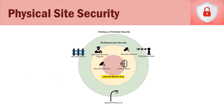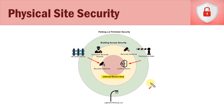Now we want to gain access to internal secure areas. To do so we need proper access controls in place — we have to be authorized to get through locked doors. In addition to that, we have more security cameras. This is a simple example of how to visualize physical site security.